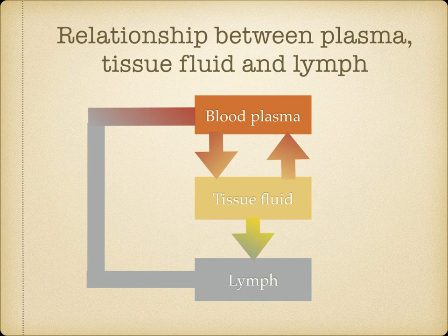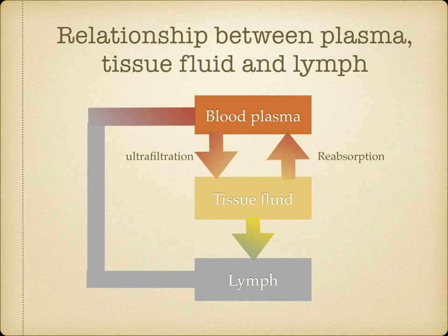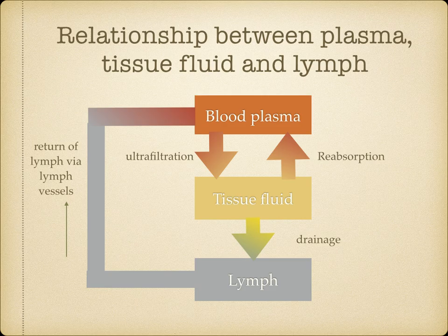Here's a diagram showing the relationship between blood plasma, tissue fluid and lymph. Blood plasma is forced out of the capillaries into the surrounding tissues — this forms tissue fluid and is called ultrafiltration. Towards the venule end, tissue fluid returns to the blood plasma — this is called reabsorption. Excess tissue fluid is drained into the lymph, which is carried in the lymph vessels back to the blood plasma, entering the bloodstream at the subclavian vein.